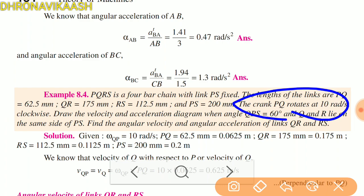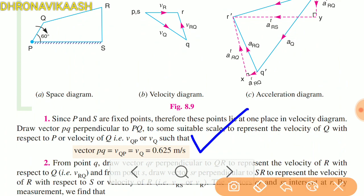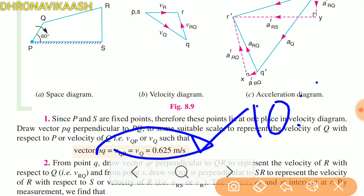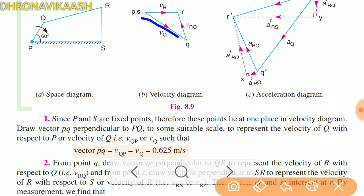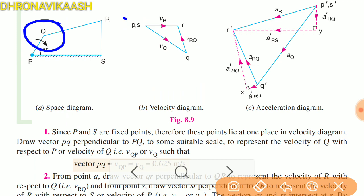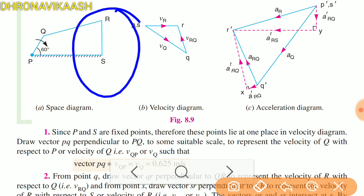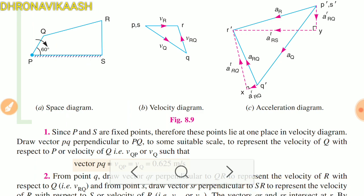PQ rotates at 10 radians per second, so V_PQ = PQ × ω = 0.625 meters per second. The enlargement scale is 10:1, so multiply by 10 gives 6.25 cm. This link of 6.25 cm is drawn perpendicular to PQ. The QR link is perpendicular to QR, and RS is perpendicular — the direction is along the infinite line.